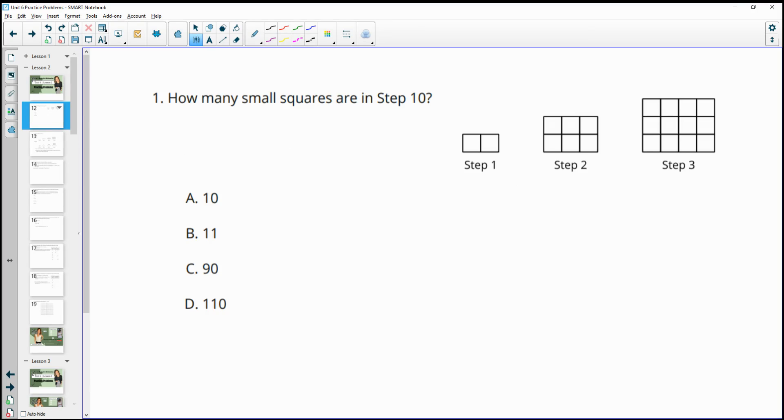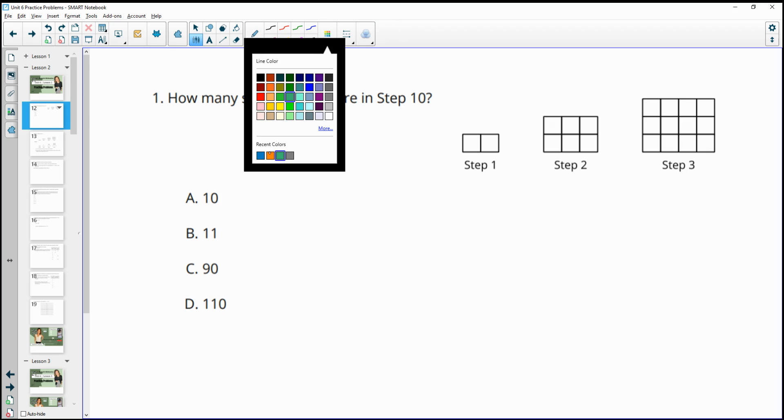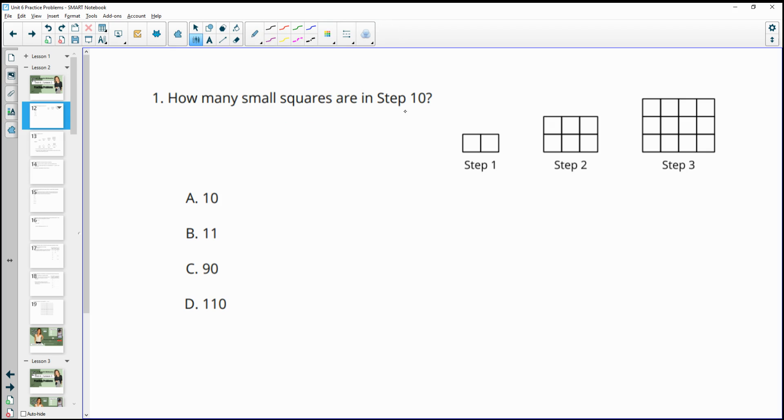Number one gives us a pattern and asks us how many small squares will be in step 10. So we have to look for the pattern and see if we can relate it to the step number so we don't have to keep drawing this pattern every time.